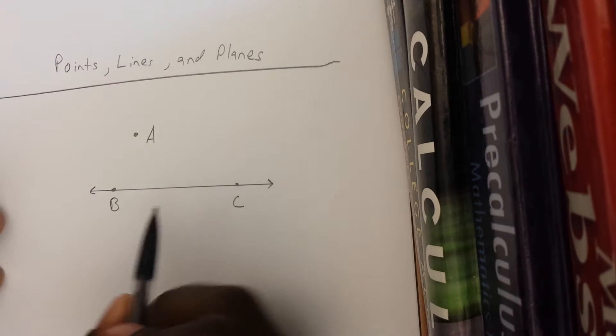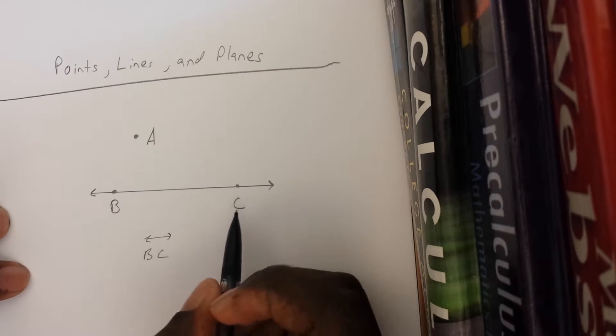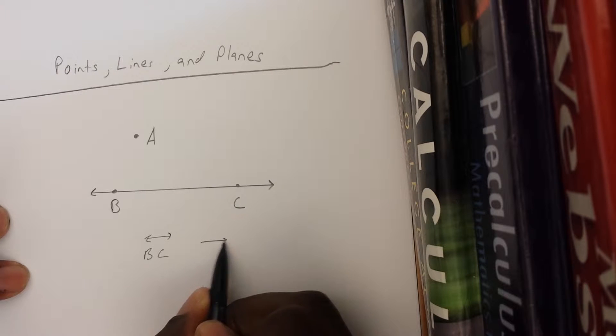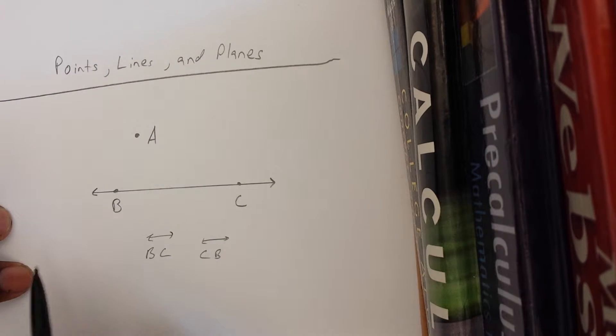So it's B and C. So this line is a line with two arrows on the end, B, C. It could also be called line C, B. Because it goes in both directions, either way is fine.